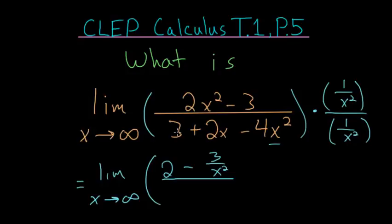And our denominator, we'll have 3 times this, which is just 3 over x squared, plus 2x over x squared. One of the x's will cancel from the top and bottom and we'll be left with 2 divided by x.